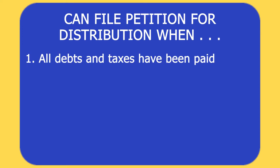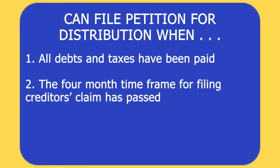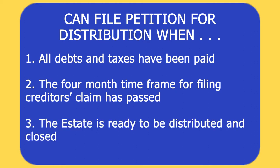First, filing a final account report and petition for distribution. The personal representative can file this document when all debts and taxes have been paid, the four-month time frame for filing creditors' claims has passed, and the estate is ready to be distributed and closed. Ideally, the estate should be ready to file this petition within one year of receiving letters of administration, or 18 months if you need to file a federal estate tax return. If the estate cannot meet this deadline, the personal representative must file a report on the status of the estate instead. An experienced probate lawyer can help file the necessary paperwork and meet all of the deadlines.